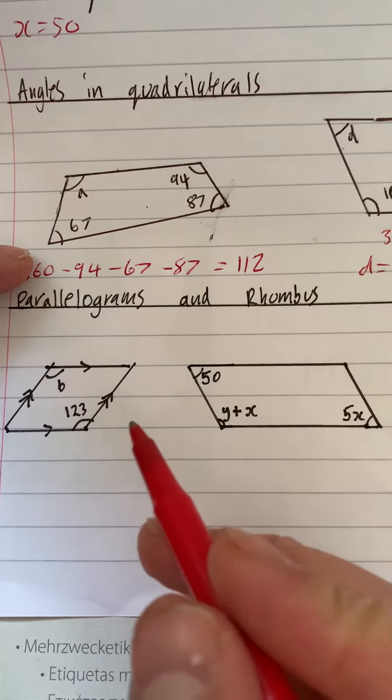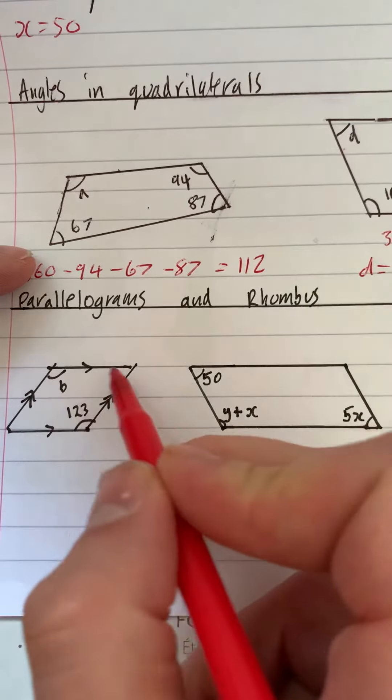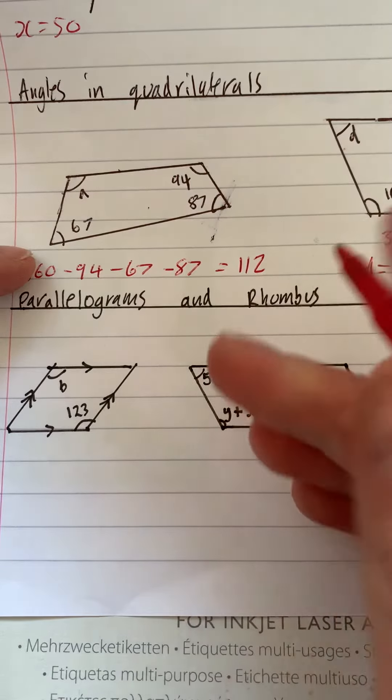Okay, parallelograms and rhombuses. Now remember, rhombus is like a square on its side, and a parallelogram is like a rectangle on its side.